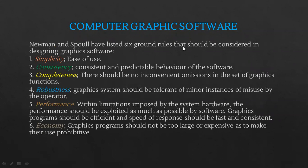Newman and Sproull have listed six ground rules that should be considered in designing graphic software. The first is simplicity — the software should be simple and easy to use. You shouldn't have too much information on the dialogue boxes; everything should be kept simple.